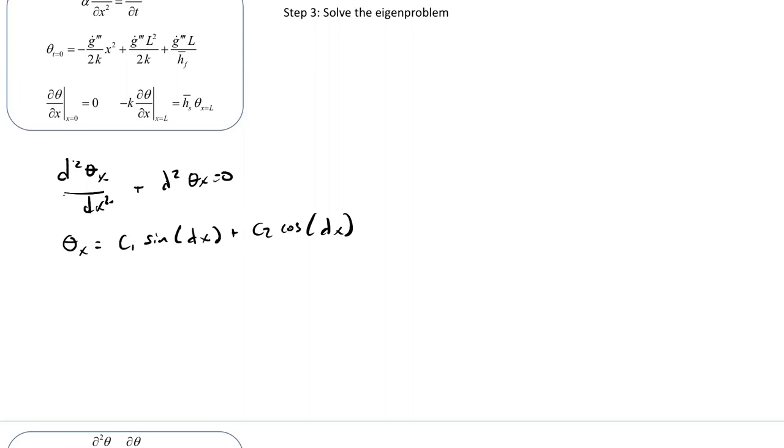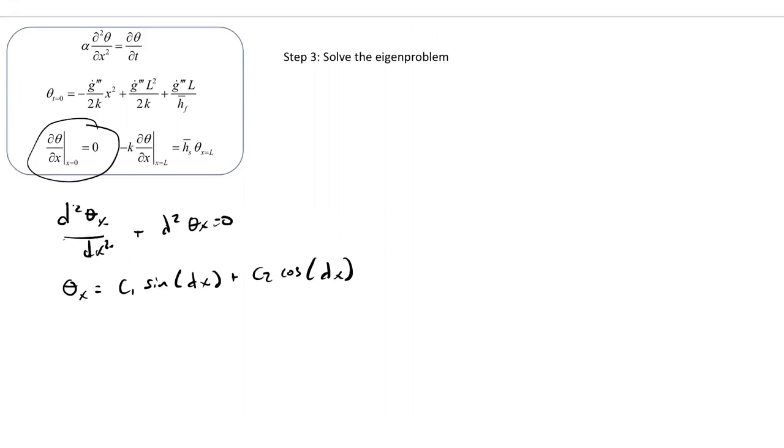So then taking the derivative of that, the first boundary condition here, taking the derivative gives us D theta X at X equals zero is gonna be C1 times lambda times cosine of lambda times zero minus C2 times lambda times sine of lambda times zero. And our boundary condition says that's all equal to zero. So C1 times lambda times one has to equal zero, so C1 has to equal zero.